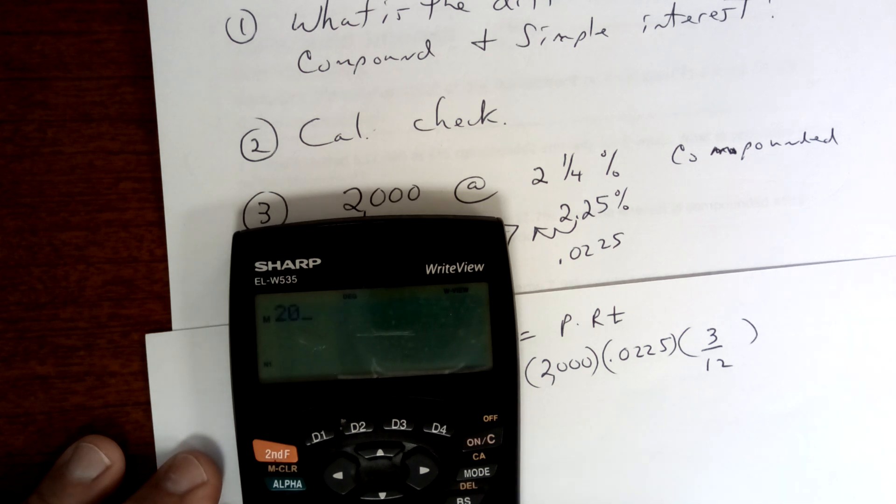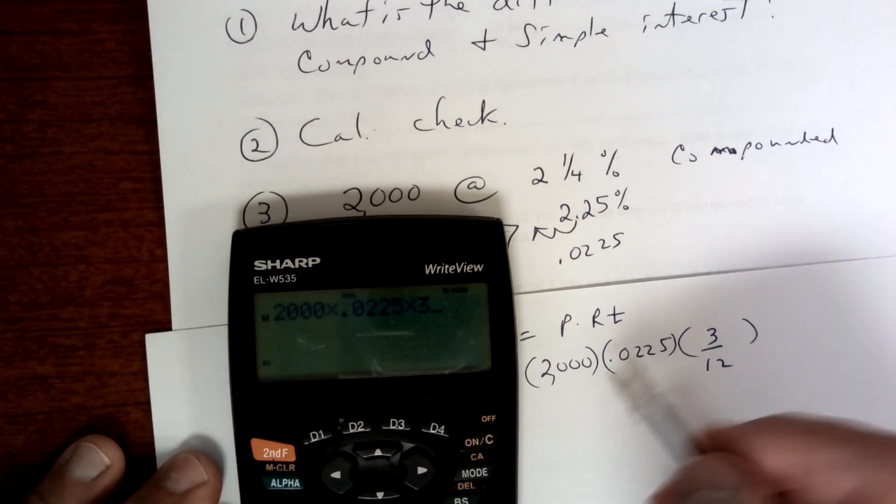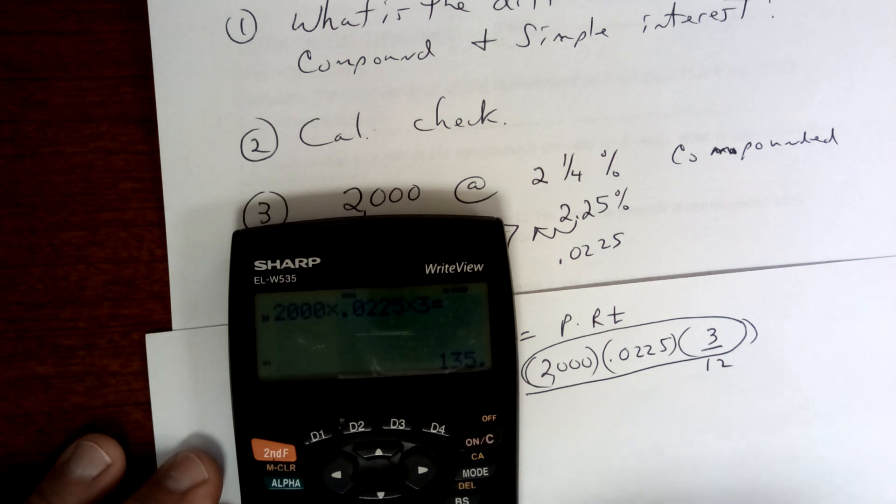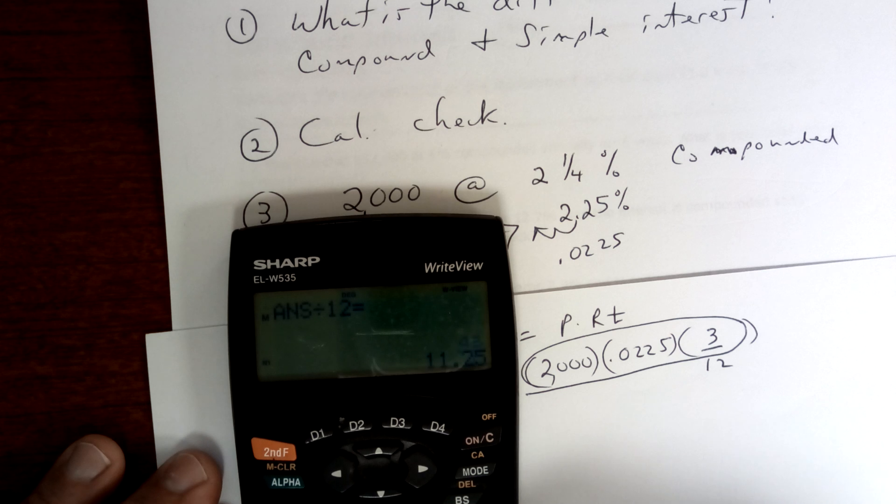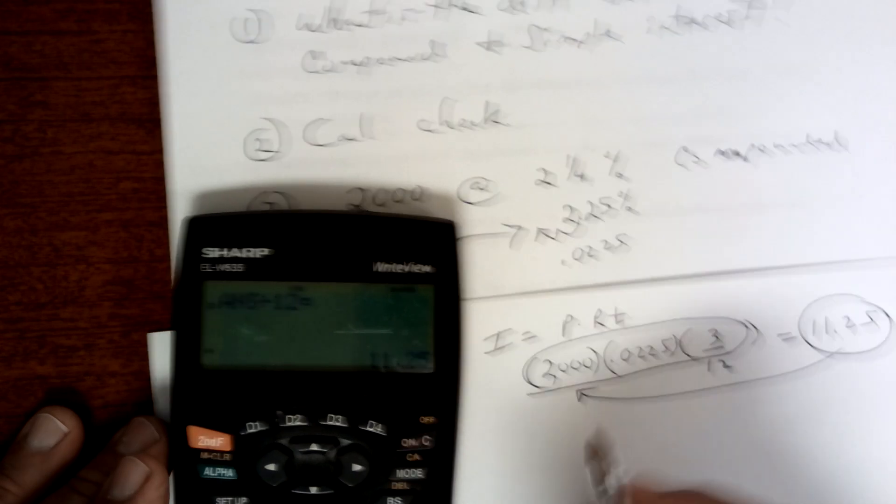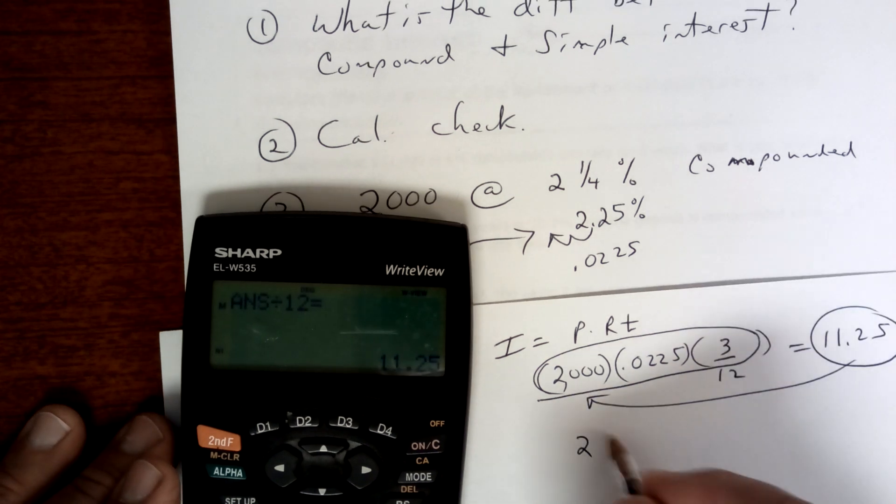Anyway, you're going to get your calculator, so get it out. I'm only going to work a couple of these. So you're going to take 2000 times 0.0225 times 3, all of these right here, and then press equals, and then divide by 12. Now see if you get my number here. So you get $11.25.